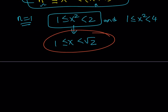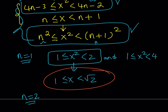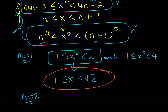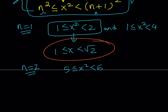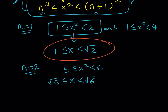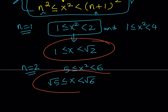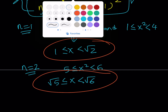For n equals 2: 4 times 2 minus 3 is 5, so x squared is between 5 and 6. Since x is positive, x needs to be between root 5 and root 6. The interval is half-closed: [√5, √6).